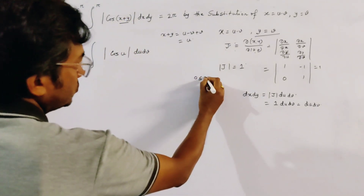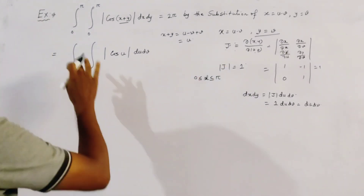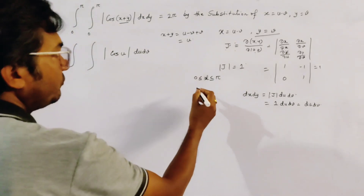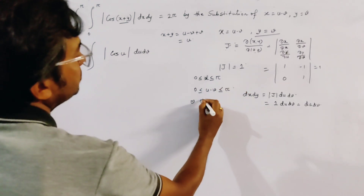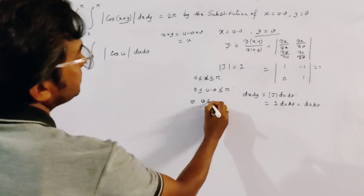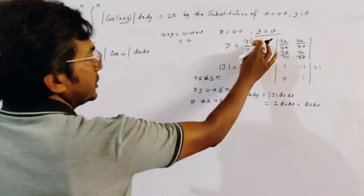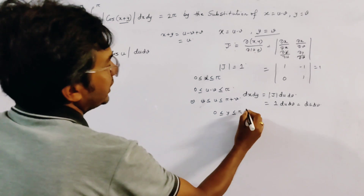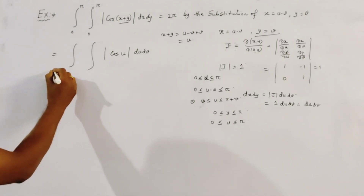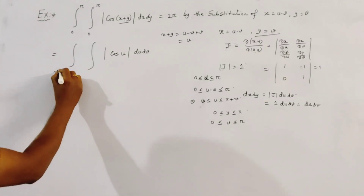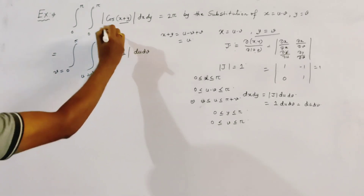Since 0 ≤ x ≤ π, the range of integration gives 0 ≤ u - v ≤ π, that is v ≤ u ≤ π + v. And the range of y is 0 ≤ y ≤ π, that is 0 ≤ v ≤ π. So the constant range is on the outside: v = 0 to π, and u = v to π + v.